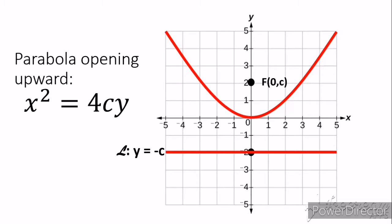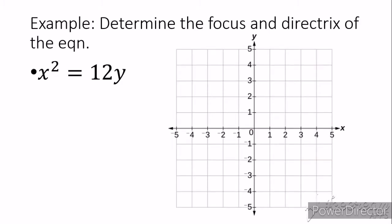We can actually measure how wide the parabola is using the latus rectum, but for today our main goal is to find our focus and our directrix. When the parabola opens upward, our focus is above its vertex — in this graph, 2 units above the vertex. While our directrix, or the line, is 2 units below our vertex. Let's try to put it into an example.